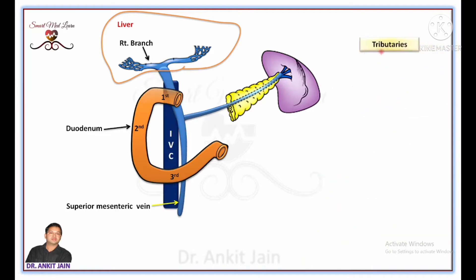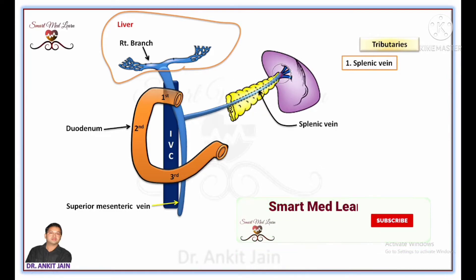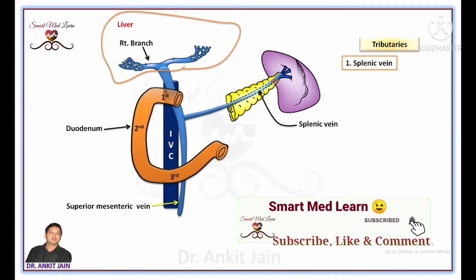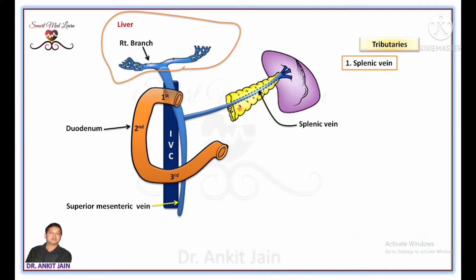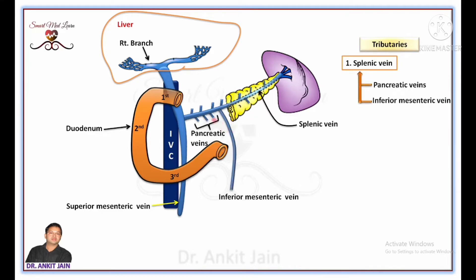Now let's discuss the tributaries of the portal vein. The first tributary is the splenic vein, which is formed at the hilum of the spleen and runs from left to right side behind the body of the pancreas. Inferior mesenteric vein and numerous pancreatic veins open into the splenic vein during its course behind the body of the pancreas. The second tributary is the superior mesenteric vein, which joins the splenic vein behind the neck of the pancreas and forms the portal vein.